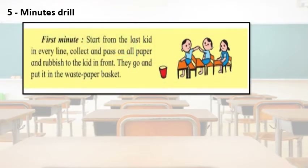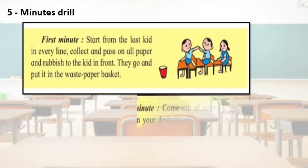In the first minute, start from the last kid in every line. Collect and pass on all paper and rubbish to the kid in front. They go and put it in the waste paper basket — like a passing-the-parcel game. The last-line students go on passing the rubbish and papers to the front child, and the front child puts everything in the basket or dustbin.